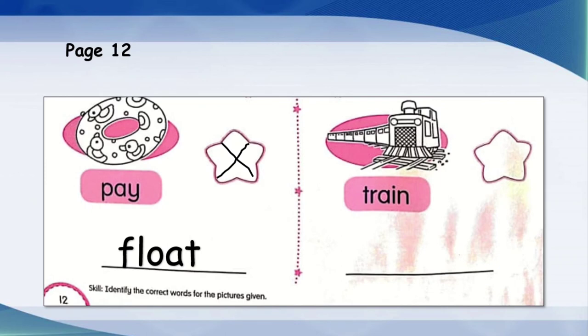Very good. So we have reached the last picture. Train. So does the picture show a train? Yes, it's a train. Good job. Do you have to write the answer again in the line given? No, you don't have to write because train is the correct answer. You're a very good student.